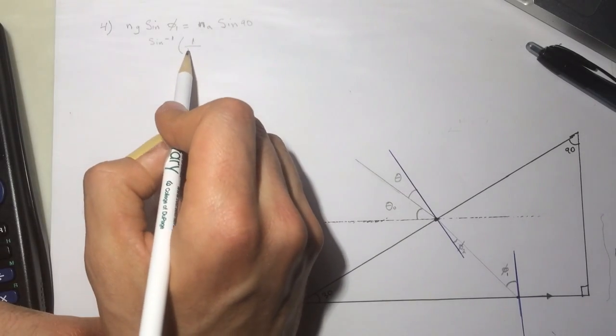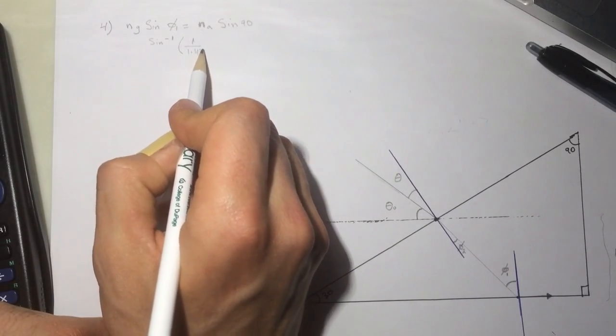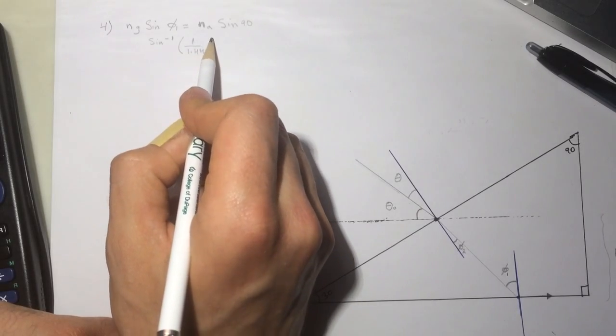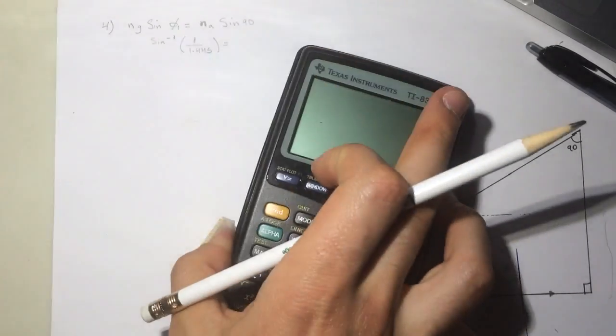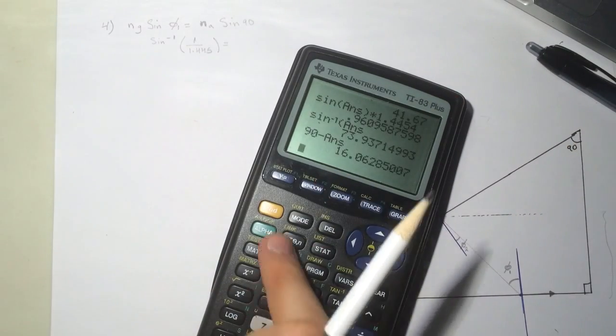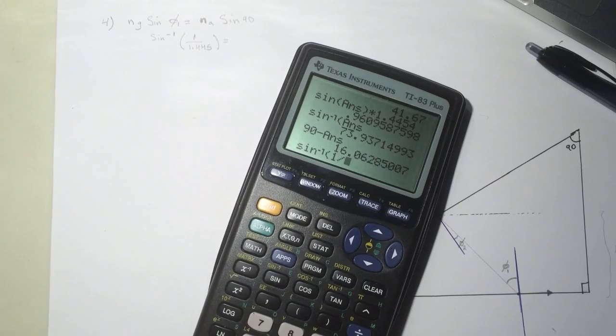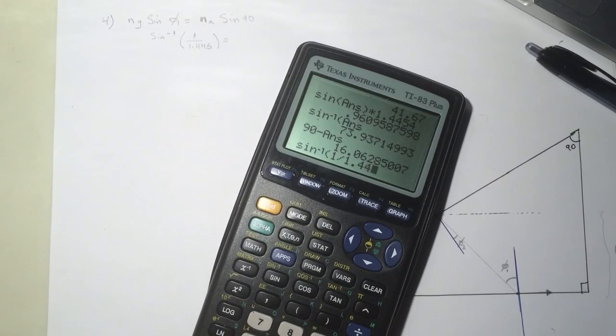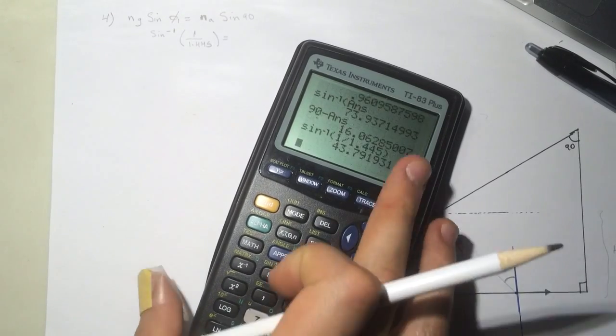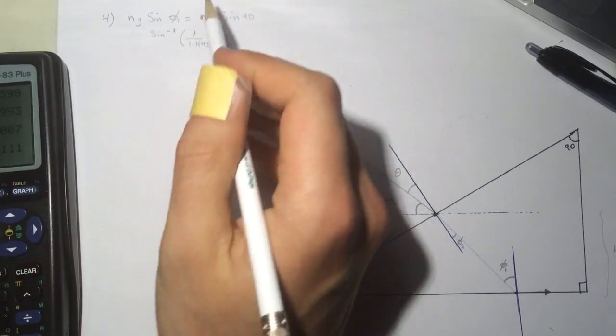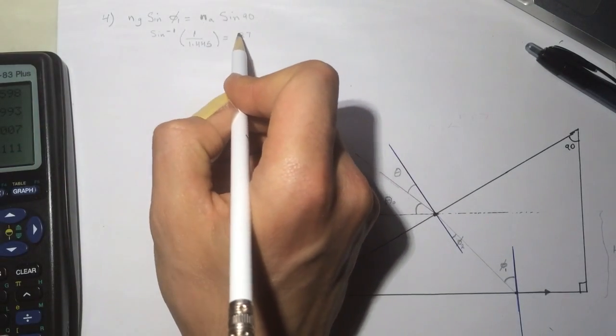So sine inverse 1 divided by the air is 1 divided by the ng which we found in the previous video, 1.445. For this guy we'll get sine inverse of 1 divided by 1.445, I got 43.79 degrees.